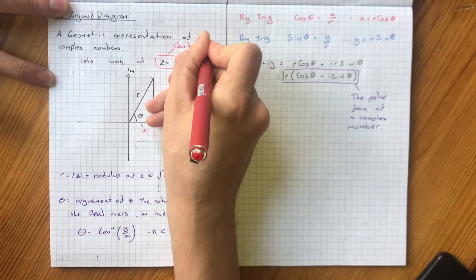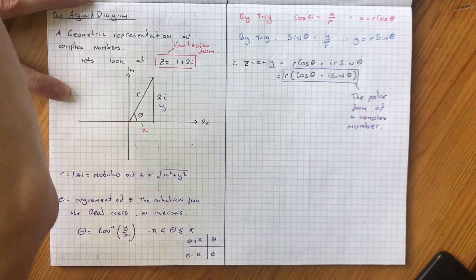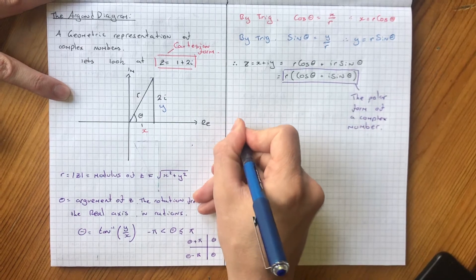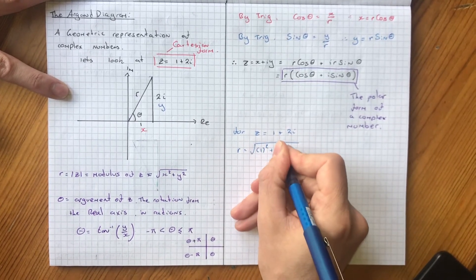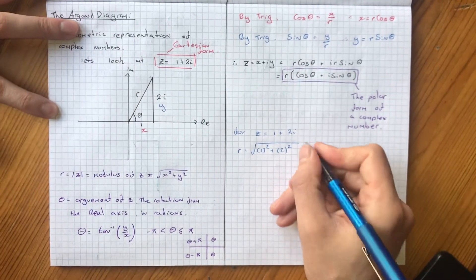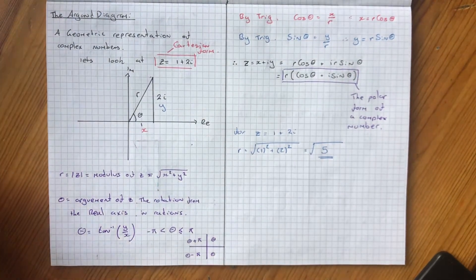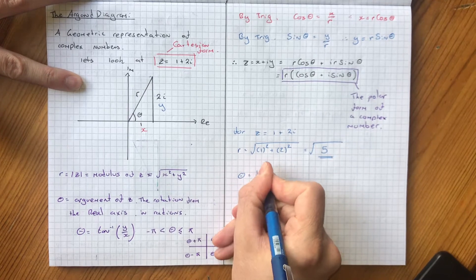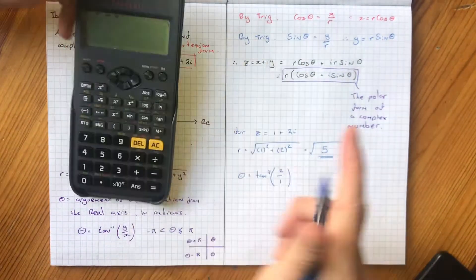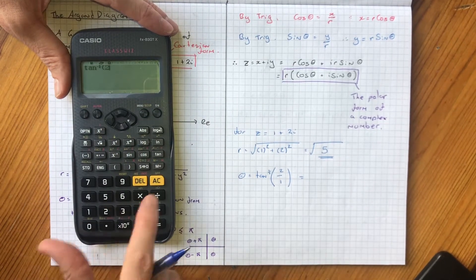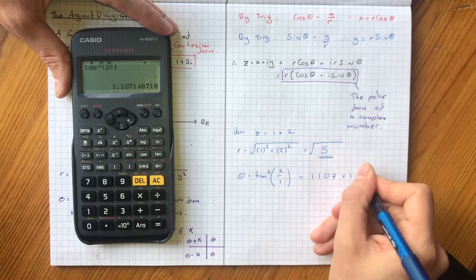Let's work out the polar form of z equals 1 plus 2i. The first thing we need to do is find r. r is going to be equal to the square root of the x component squared plus the y component squared — 1 squared is 1, 2 squared is 4, so we get the square root of 5. Now to find the argument, theta equals tan to the minus 1 of y over x, so 2 over 1. Using a calculator in radians, shift tan of 2 divided by 1 gives us 1.107, so to three significant figures we can call it 1.11.